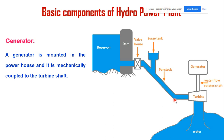The generator is mounted in the powerhouse and is mechanically coupled to the turbine shaft. When the turbine blades rotate, they drive the generator and electricity is generated. This electricity is then stepped up with the help of a transformer for further power transmission.